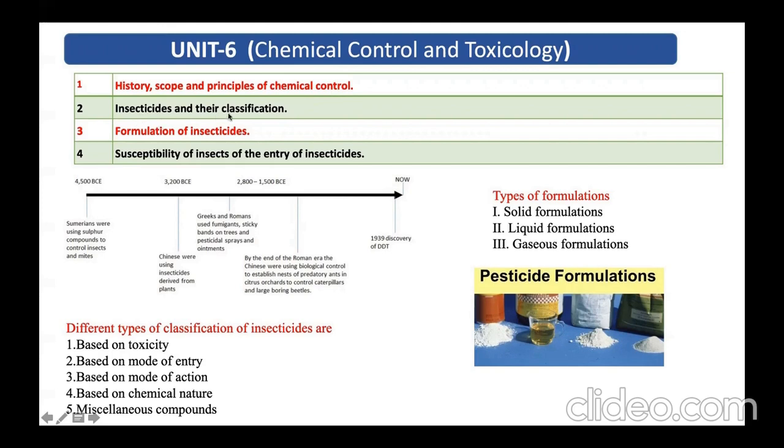Then coming to insecticides and their classification. You need to study detailed classification. Classification is mainly based on toxicity, where that can be extremely toxic, highly toxic, moderately toxic, or slightly toxic. That is based on your LC50 value and LD50 value. Then coming to your mode of entry. Mode of entry includes stomach poison, contact poison, and then your fumigant and systemic insecticide.